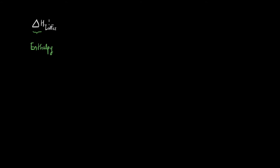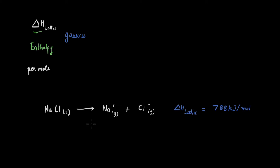Lattice enthalpy is defined as the enthalpy change when one mole of an ionic compound dissociates into its ions in a gaseous state. For example, in this reaction where sodium chloride dissociates into Na⁺ and Cl⁻ ions, both in gaseous state, the enthalpy change for this reaction is the lattice enthalpy, and its value is given here.